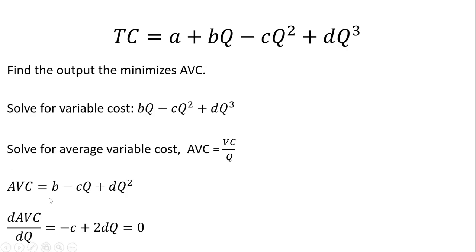The derivative of average variable cost: the derivative of B is a constant, that's zero. The derivative of CQ is just minus C. And for the last term, the derivative of DQ squared — bring down the two in front, then subtract one from the exponent, leaving us with Q to the power of one, or just Q.